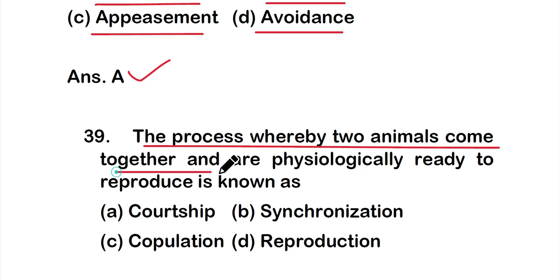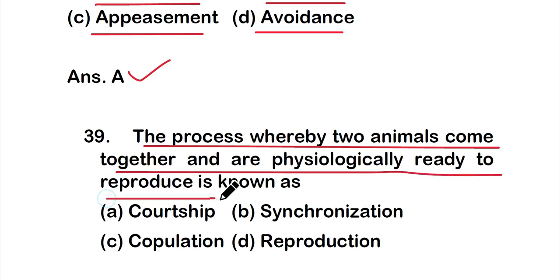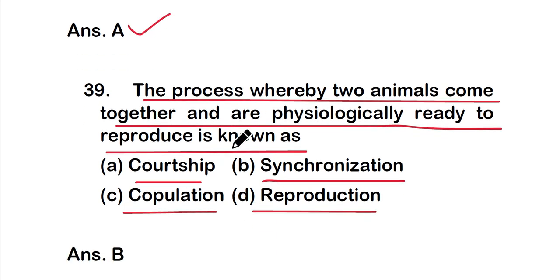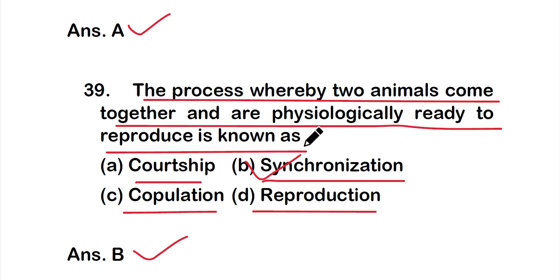Question number 39: The process whereby two animals come together and are physiologically ready to reproduce is known as — option A: courtship, option B: synchronization, option C: copulation, or option D: reproduction. The correct answer is option B — synchronization. The process whereby two animals come together and are physiologically ready to reproduce is known as synchronization.